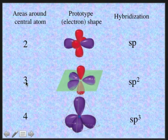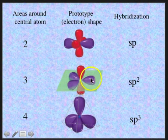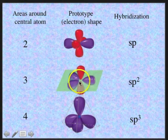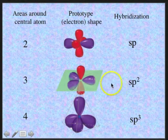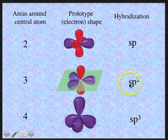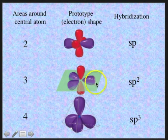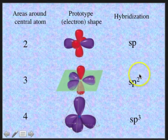If we have three areas of electrons around the central atom, think of three balloons tied together forming a triangular plane. And perpendicular to that plane is an unhybridized p orbital. The hybridization occurs when an s orbital and two of the three p orbitals combine to form three new equivalent sp2 hybridized orbitals, each one of these in the triangular plane.